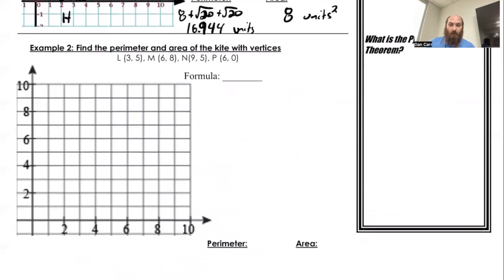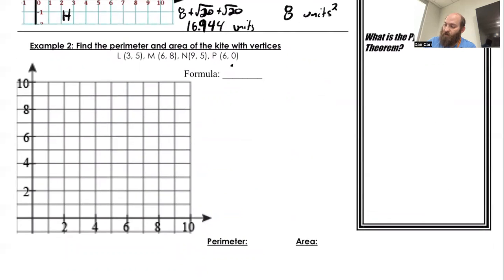Find the perimeter and area of the kite. So I'm going to just label it right now. I know it's going to be one half of diagonal 1 times diagonal 2. So after I do everything, I'll find the perimeter of the shape. I'm still going to need to find the two diagonal lengths, which will be a little bit different. So for perimeter, we'll start by plotting everything. So L is at 3, 5. Here's L. M is at 6, 8. N is at 9, 5. And P is at 6, 0.